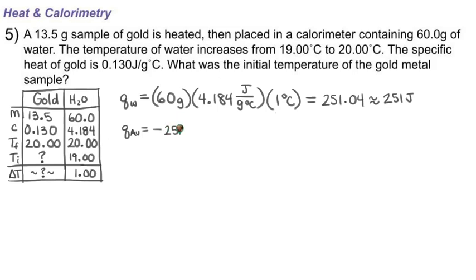Now I need to solve for the Delta T of my gold. I know that Q equals M times C times Delta T, so to rearrange this equation I just divide by M and C on both sides. So Delta T equals Q divided by M and C. We'll plug in our numbers: negative 251 joules divided by our mass of 13.5 grams times our value of C which is 0.13 joules per gram degree Celsius.